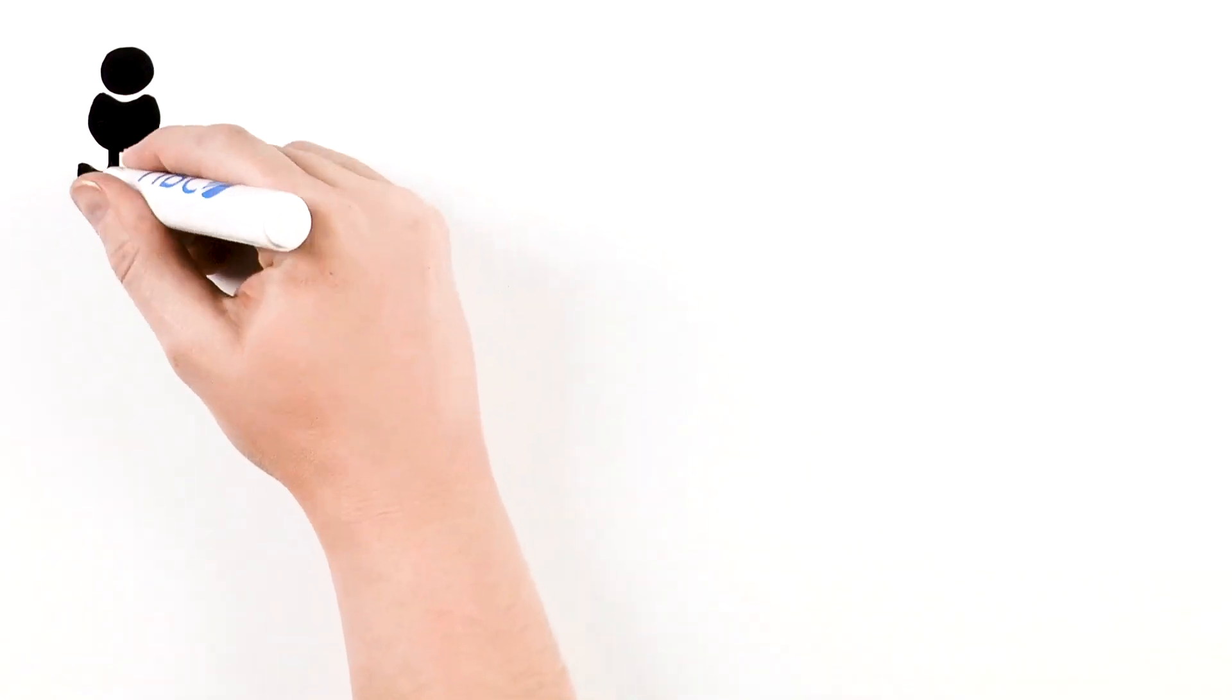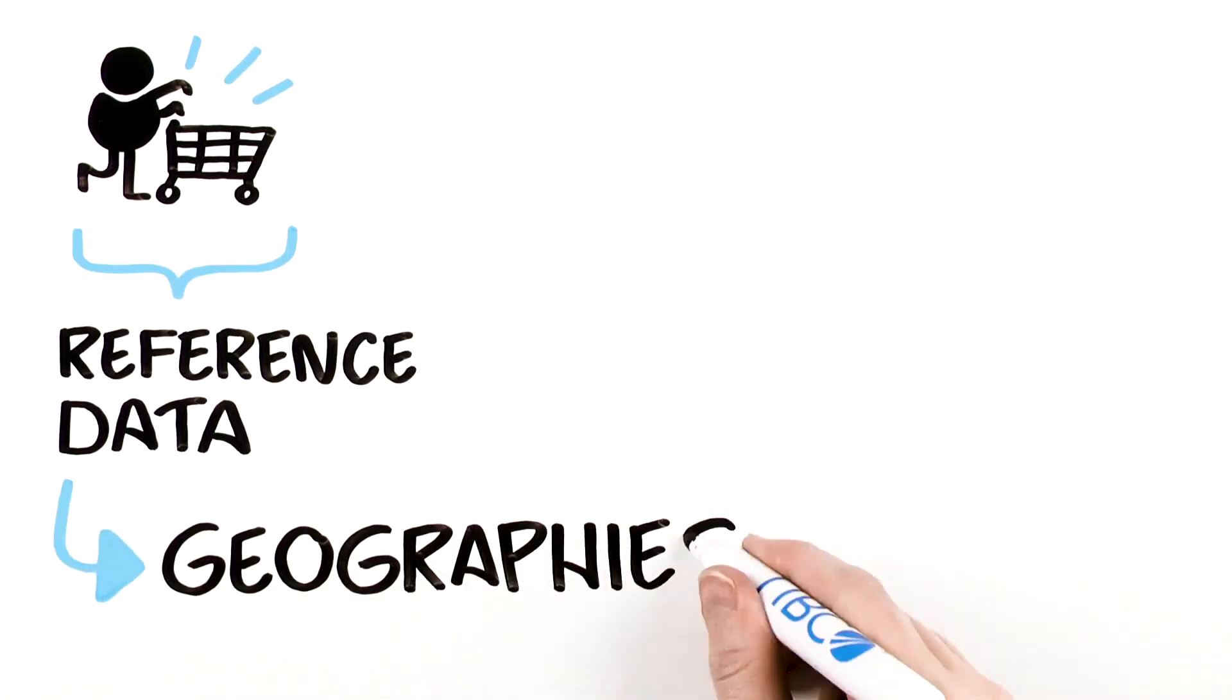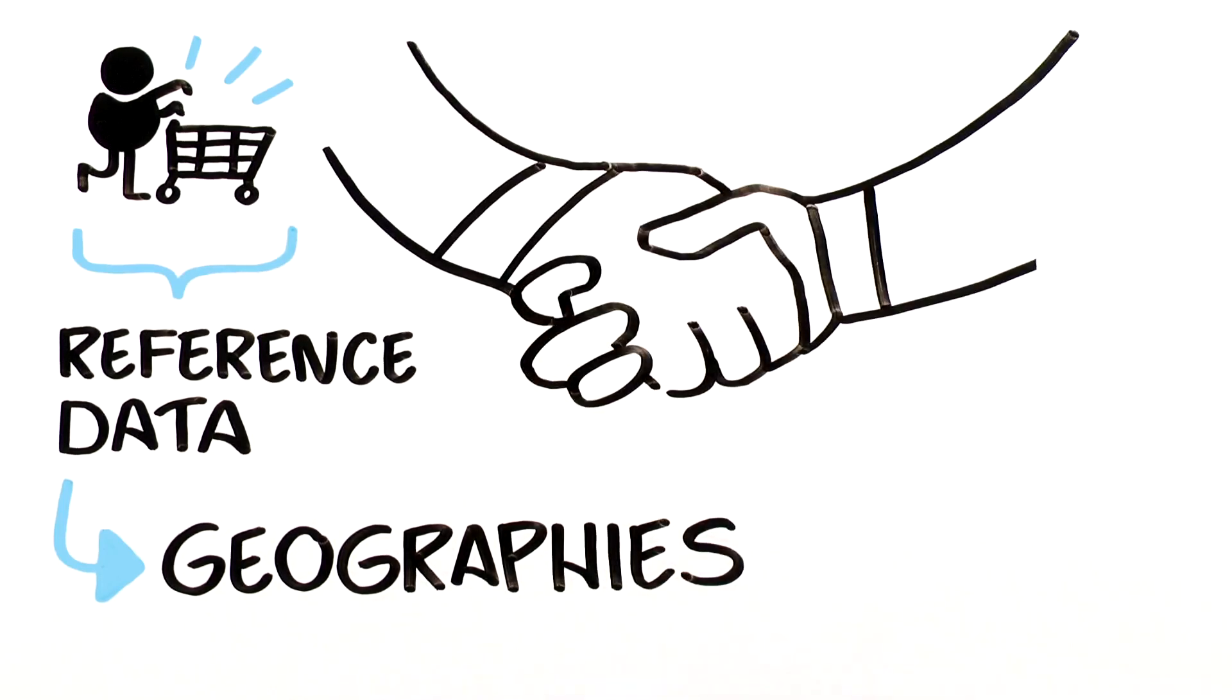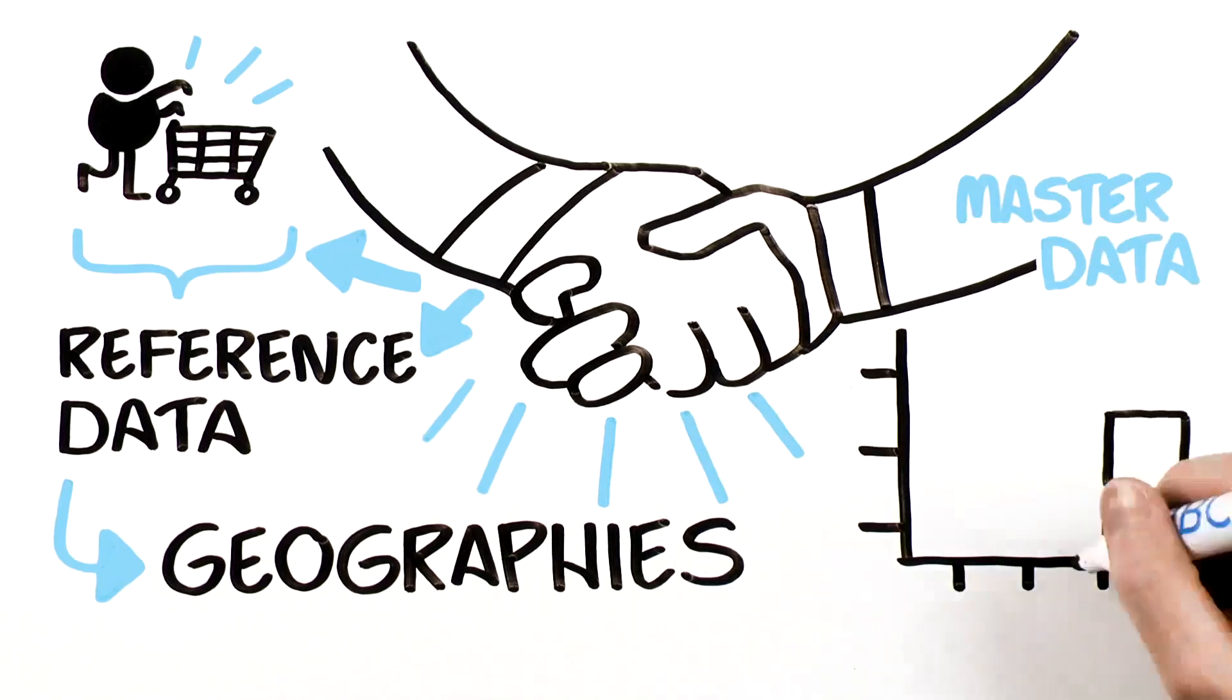Customers are connected to products, and products and customers have shared connections to reference data such as geographies. The relationships that connect these domains to each other and to other reference data is the reason we at TIBCO think of master data as a network graph.